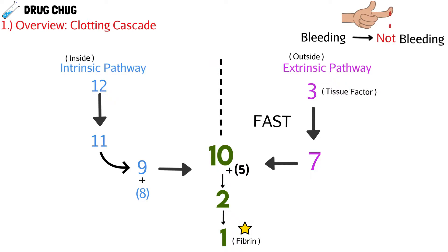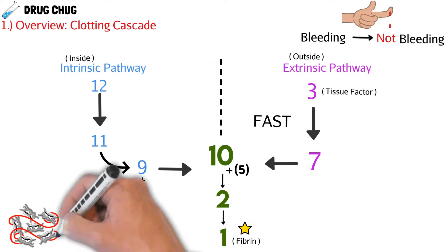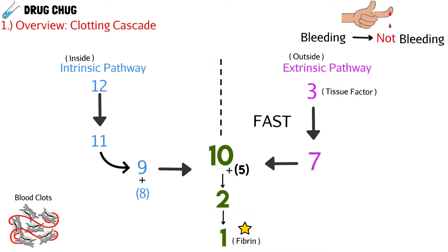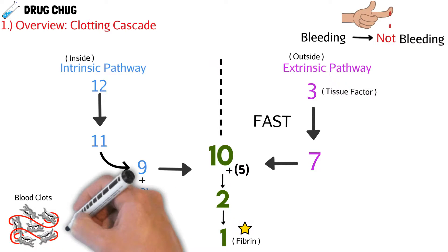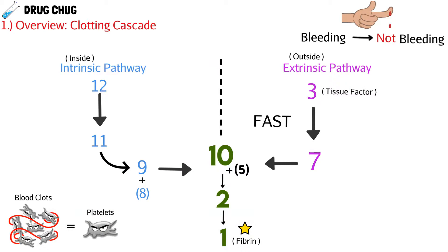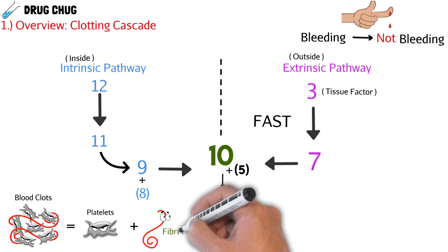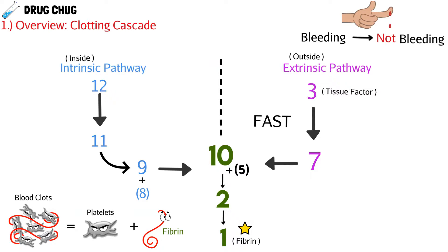So what's the point of the clotting cascade? A blood clot is made up of two main things: platelets floating in the blood, and fibrin, which is the end product of the clotting cascade. When platelets and fibrin come together, we have a strong blood clot to stop bleeding from, say, a paper cut. This was a quick overview — we didn't get into the active and inactive forms of these factors, and some go by different names.